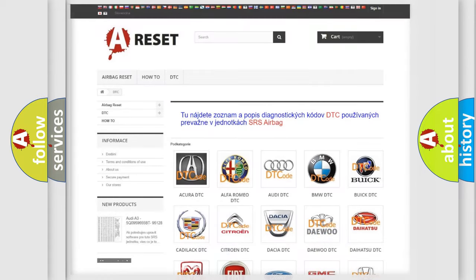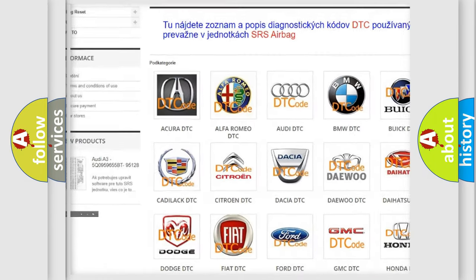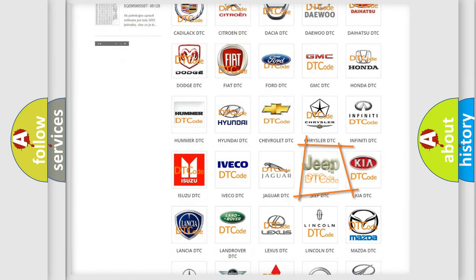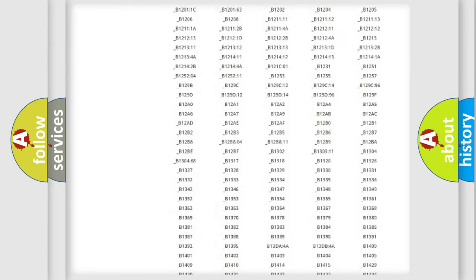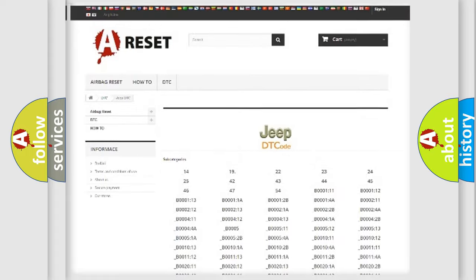Our website airbagreset.sk produces useful videos for you. You do not have to go through the OBD2 protocol anymore to know how to troubleshoot any car breakdown. You will find all the diagnostic codes that can be diagnosed in Jeep vehicles, and also many other useful things.